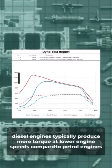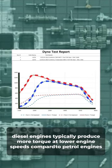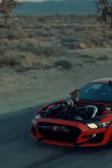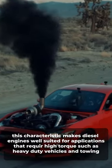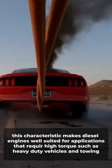Diesel engines typically produce more torque at lower engine speeds compared to petrol engines. This characteristic makes diesel engines well suited for applications that require high torque, such as heavy-duty vehicles and towing.